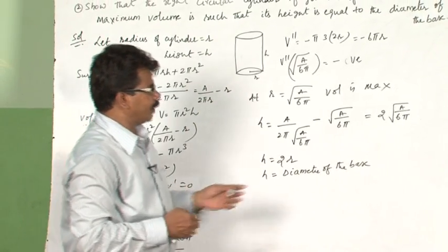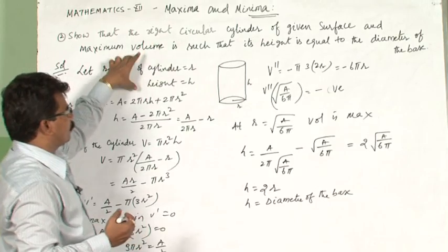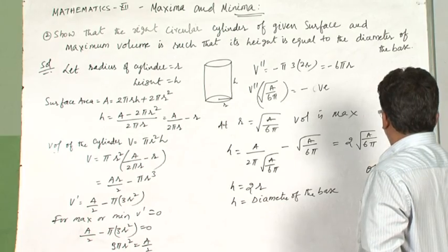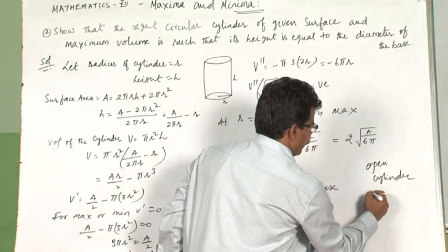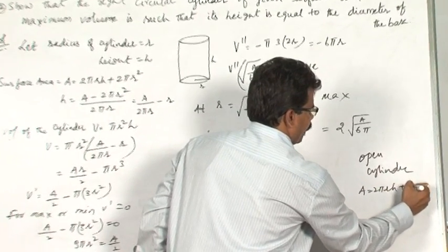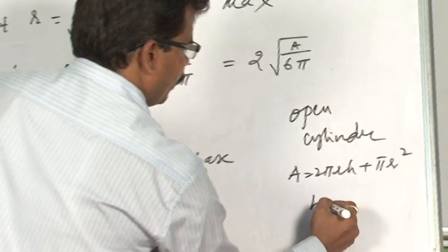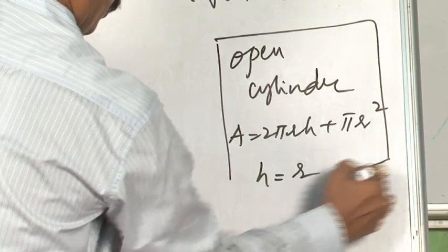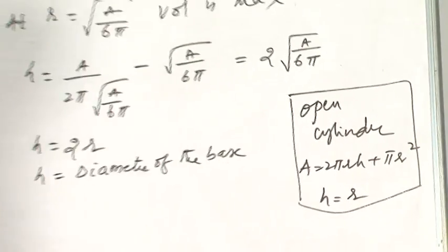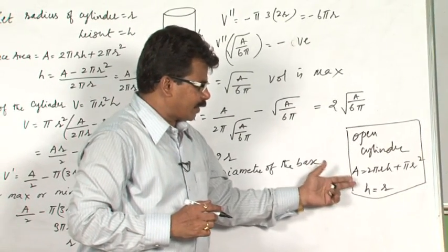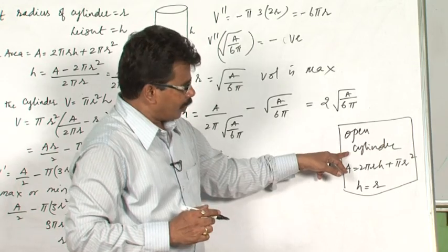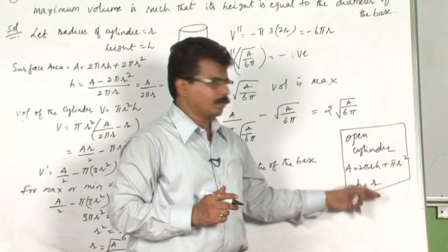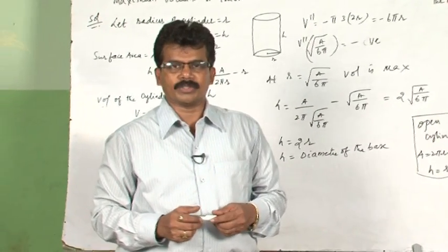A small note: here the cylinder is given as a closed cylinder. If an open cylinder is given, the surface area formula becomes A = 2πrh + πr². In that case, working through the same steps, you will get h = r. So for an open cylinder, maximum volume occurs when height equals the radius.